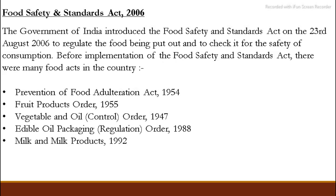The Government of India introduced the Food Safety and Standards Act on the 23rd August 2006. It was established to check that the consumption of food is good and safe. Before this act, there were many separate food acts in the country, such as the Prevention of Food Adulteration Act, 1954.